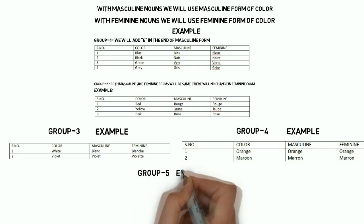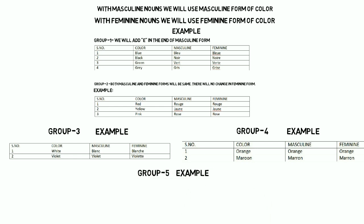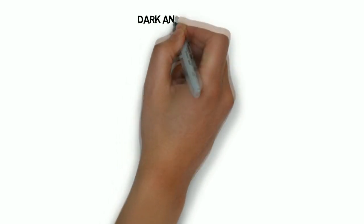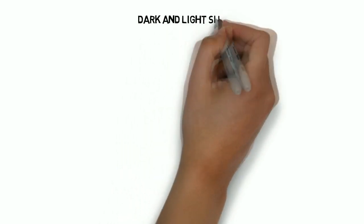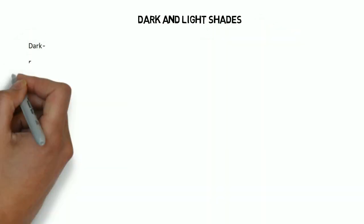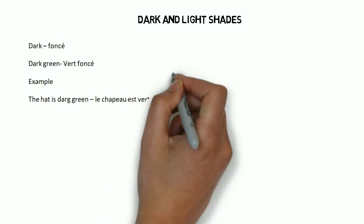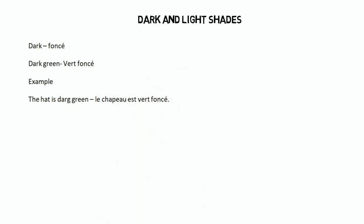Now let's move on to two more colors: silver and gold. Silver color in French is l'argent, and gold is l'or. Now let's talk about colors as dark and light. Jab hume kisi color ko bolna hai jaise dark green — so if we want to say dark green, we'll say vert foncé. Foncé is the word for dark. For example, le chapeau est vert foncé. And if we want to say light green, it's vert clair.